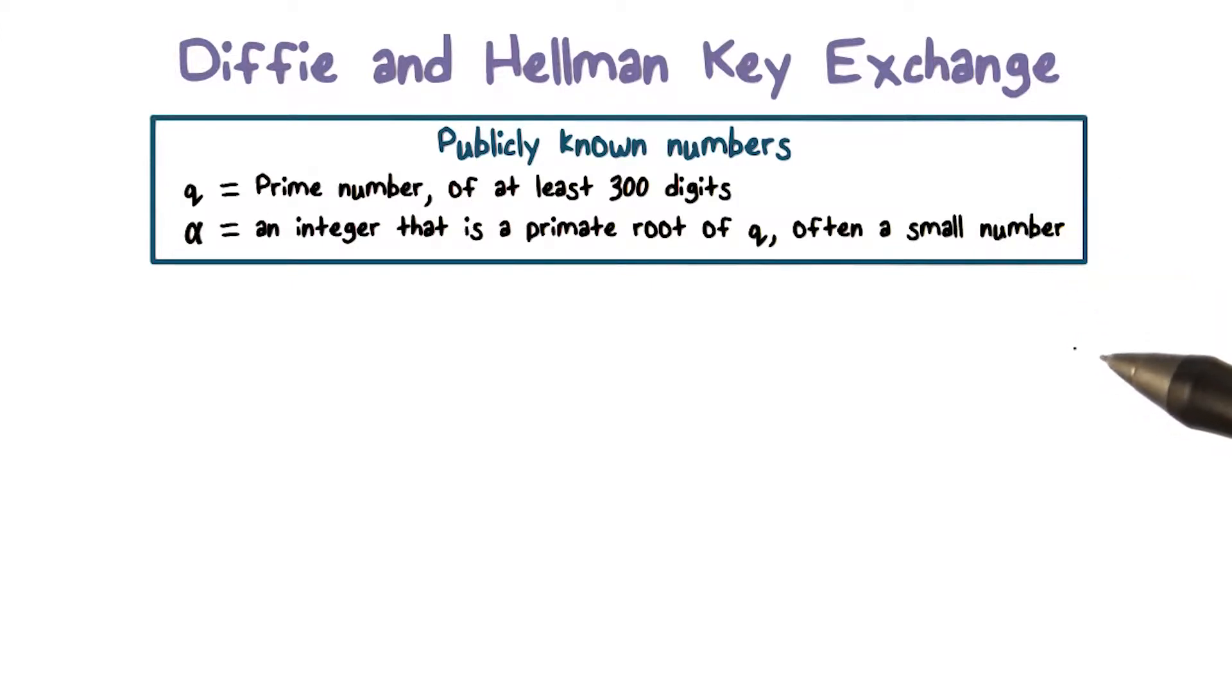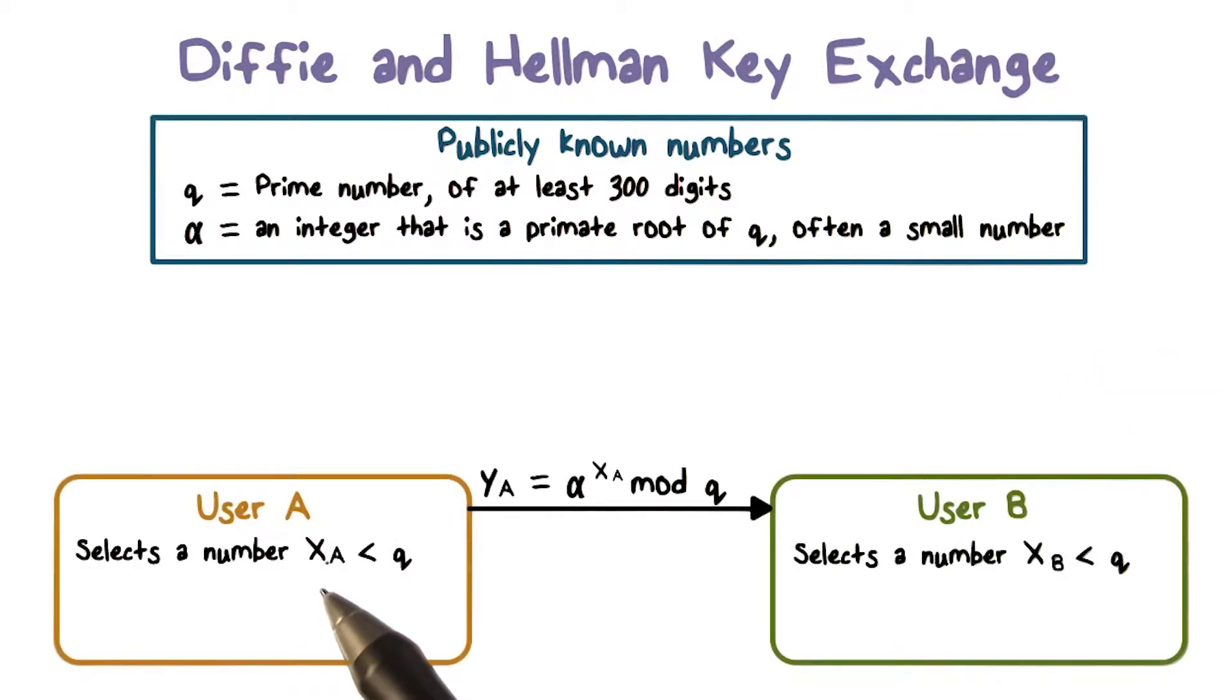Now suppose users A and B wish to exchange a key using the Diffie-Hellman key exchange algorithm. User A selects a random integer xa that's less than q and computes ya that's alpha raised to the power of xa and then mod q.